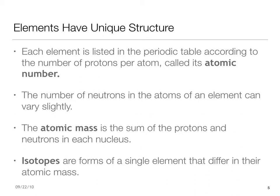We call forms of a single element that differ in atomic mass isotopes. For example, hydrogen, the lightest element, normally has only one proton and no neutrons in its nucleus. A small percentage of hydrogen atoms have one proton and one neutron. We call this isotope deuterium, or 2H.